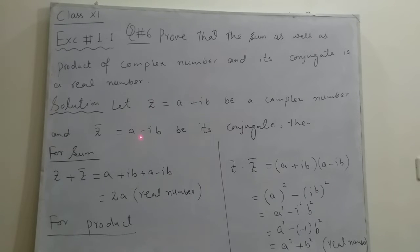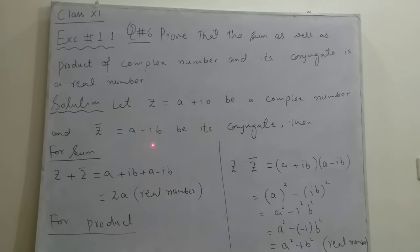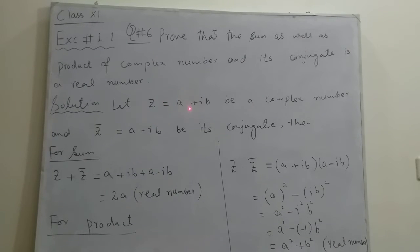sign of imaginary part will change. So if z is complex number then z bar is its conjugate.